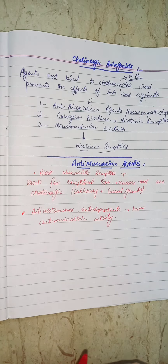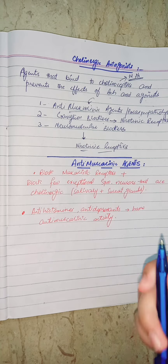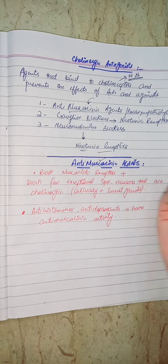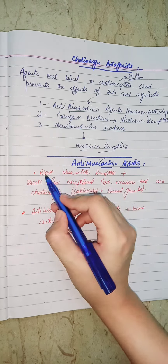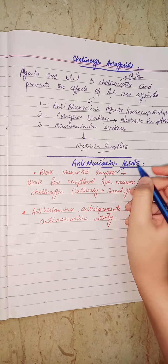Now let's talk about anti-muscarinic agents. The few important points of anti-muscarinic agents are that they block the muscarinic receptors.